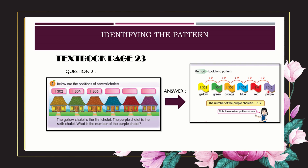The next question: state the number pattern above — ascending or descending order? We look at the first number, 1302, and the last number, 1312. The numbers are ascending — smallest to largest. So the number pattern above is ascending order, small to big.